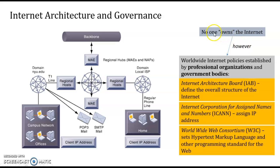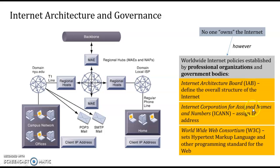No one owns the internet — nobody can say 'this is mine.' However, worldwide internet policies are established by professional organizations and government bodies. Within the internet, there is the IAB — Internet Architecture Board — which defines the overall structure of the internet, and then there is ICANN — Internet Corporation for Assigned Names and Numbers.